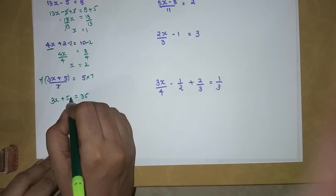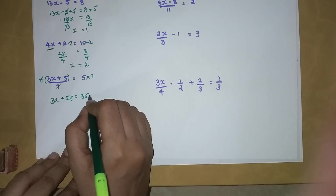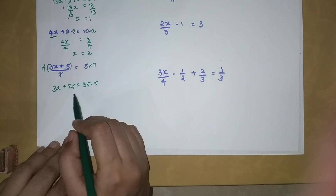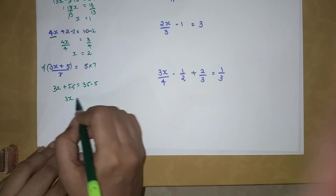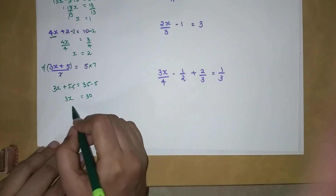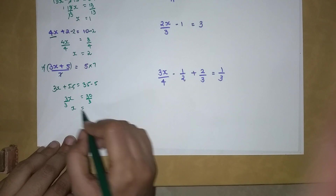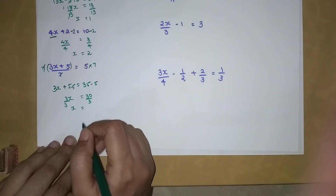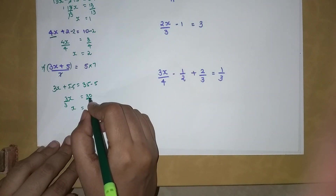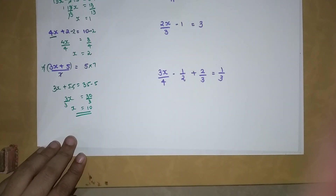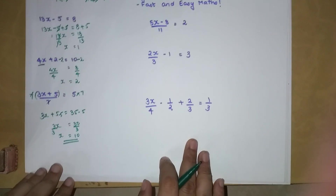Now it is very simple. I want to get rid of this 5, so I subtract 5 from both sides, giving 3X equals 30. Then I divide both sides by 3 because I want just 1X, so X equals 10.